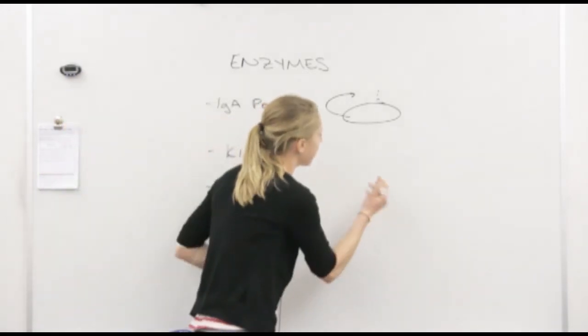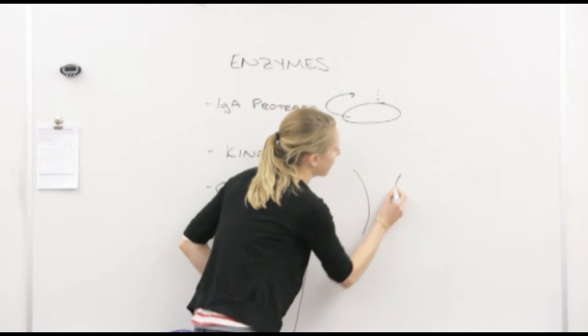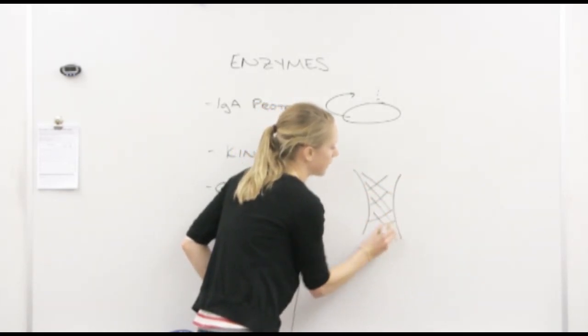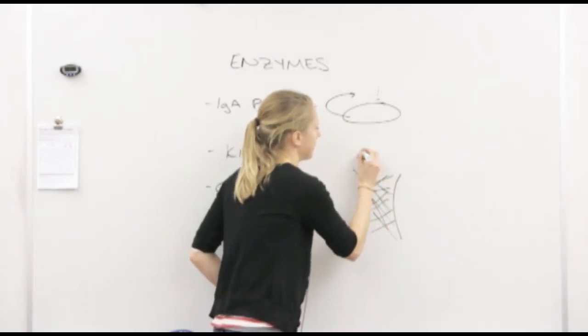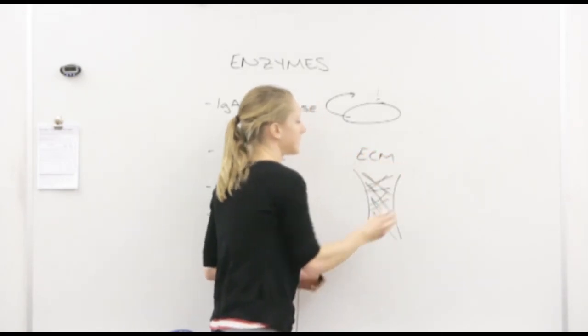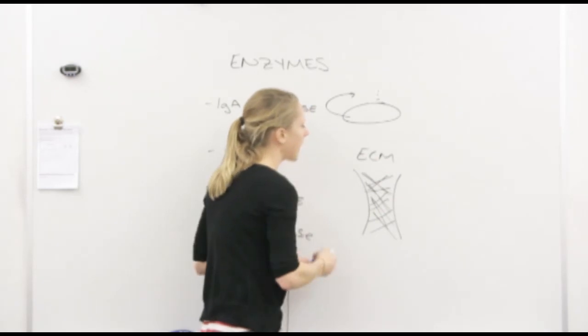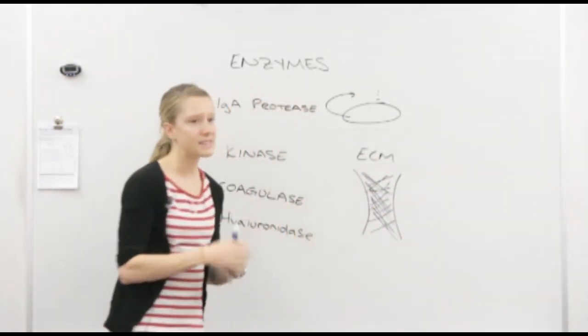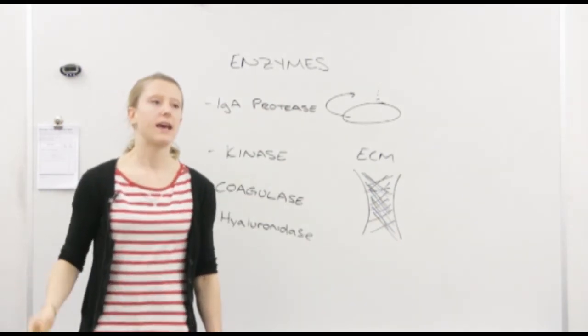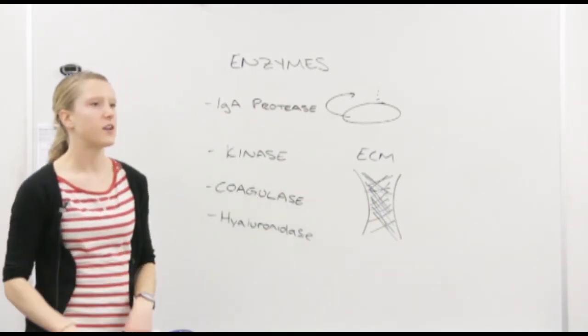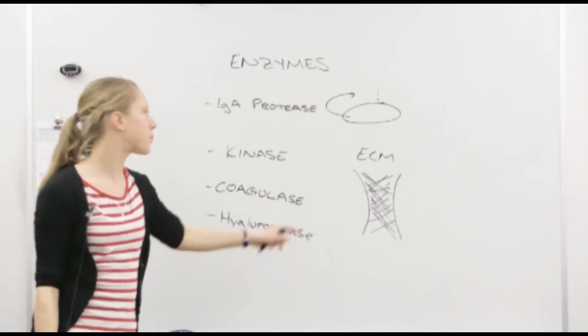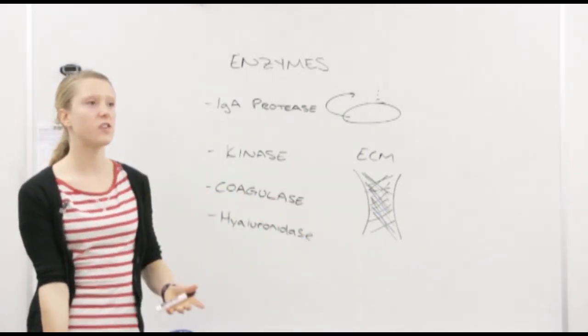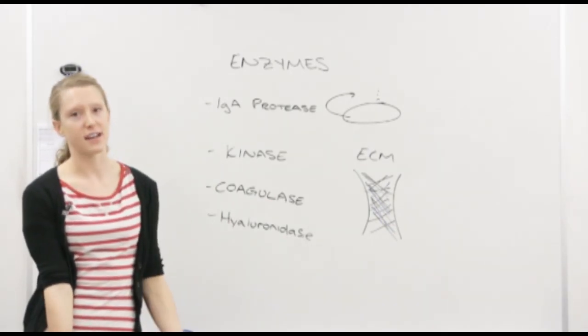Yeah, so our cells, they have a glue between them. It's called the extracellular matrix, the ECM. And within that ECM, we have something called hyaluronic acid. So hyaluronic acid, since it's part of the extracellular matrix, it's the glue between your cells. What hyaluronidase does is it breaks up that hyaluronic acid, which is pretty much dissolving the glue between your cells. So what happens to your cells? They start falling off.